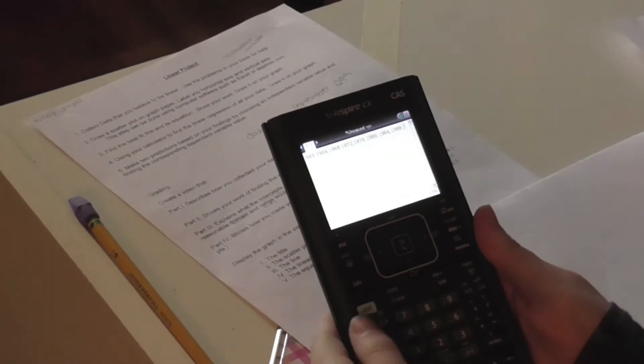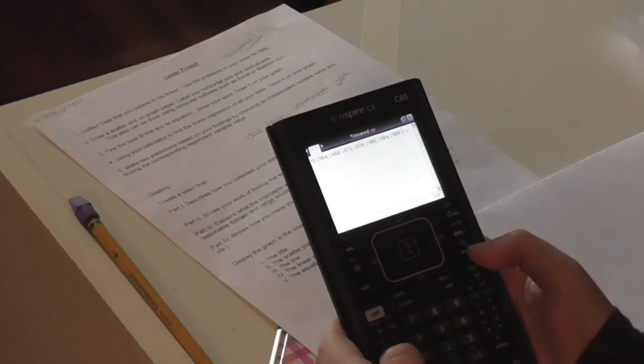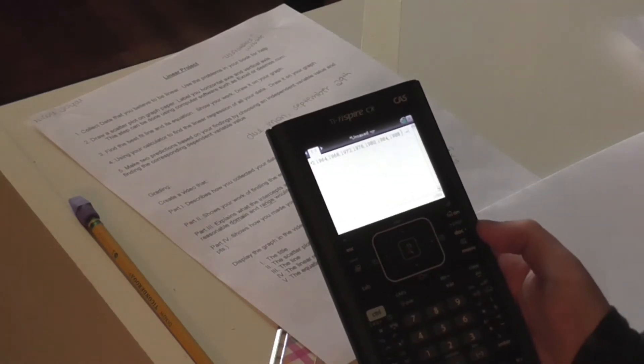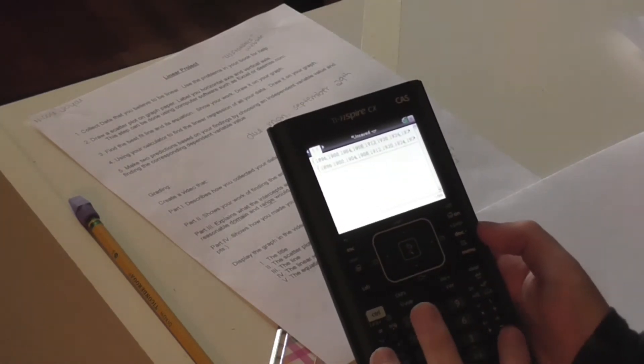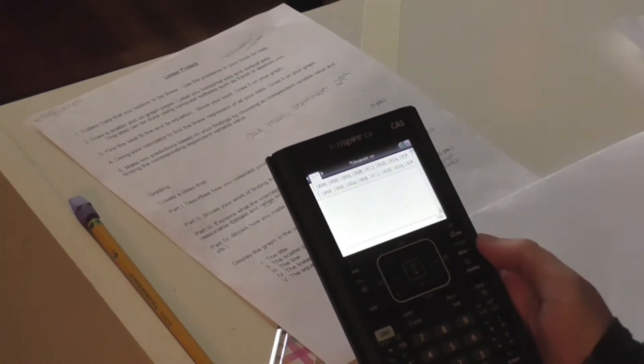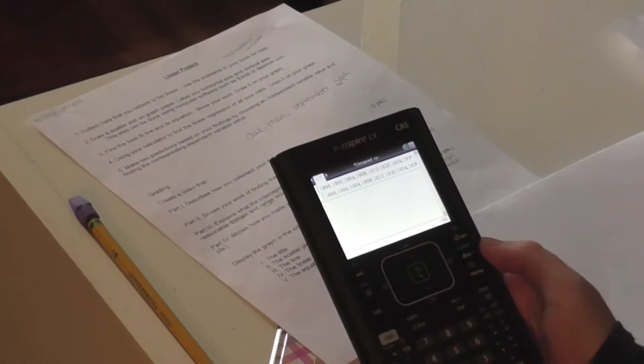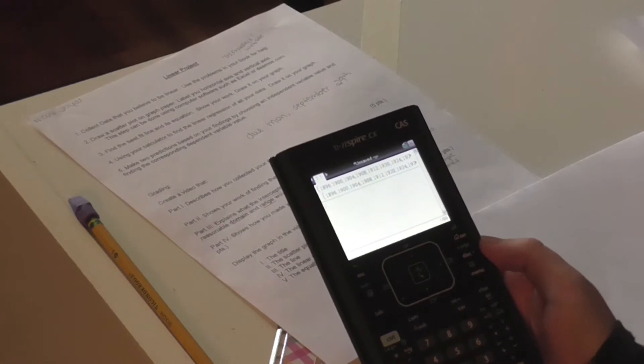The next thing you have to do is hit control variable to store it, and you want to store that as d, since it's your domain, and you can press enter. The next thing you have to do is the exact same thing with your range and your y values, except you want to store that as r.